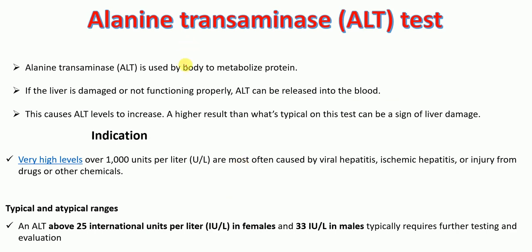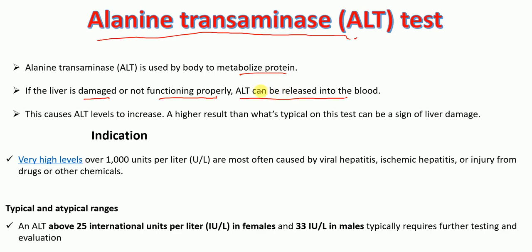The first test is alanine transaminase or ALT test. Alanine transaminase or ALT is used by the body to metabolize protein. If the liver is damaged or is not functioning properly, ALT can be released into the blood, causing ALT levels to increase in the blood. Therefore, higher than typical levels on this test can be a sign of liver damage.